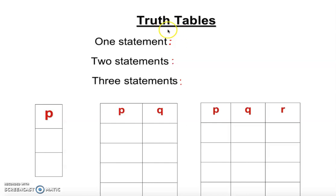I'm going to talk about truth tables in this video — very basic: how to construct the base of a truth table. A truth table is used to analyze Boolean expressions, and also to analyze whether a compound statement is true or false. We use truth tables to come up with a conclusion about whether a statement is true or false. In the computer field — programming languages and coding — Boolean expressions and truth tables are used a lot.